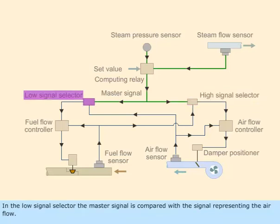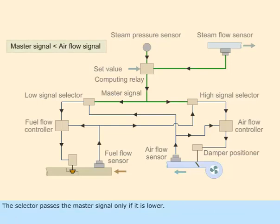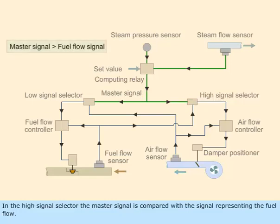In the low signal selector, the master signal is compared with the signal representing the air flow. The selector passes the master signal only if it is lower. In the high signal selector, the master signal is compared with the signal representing the fuel flow.